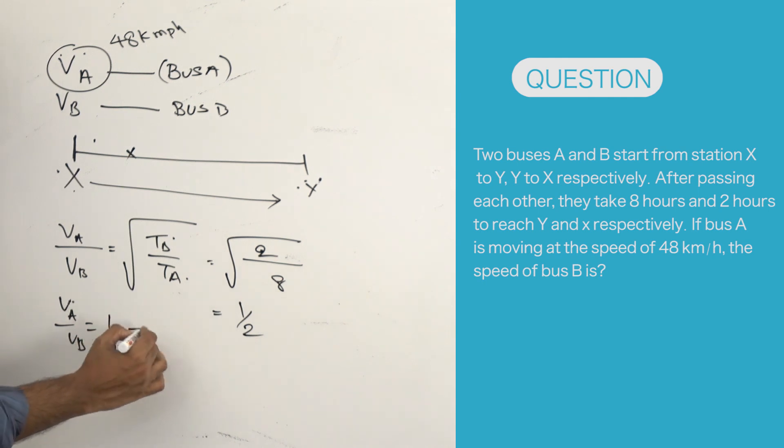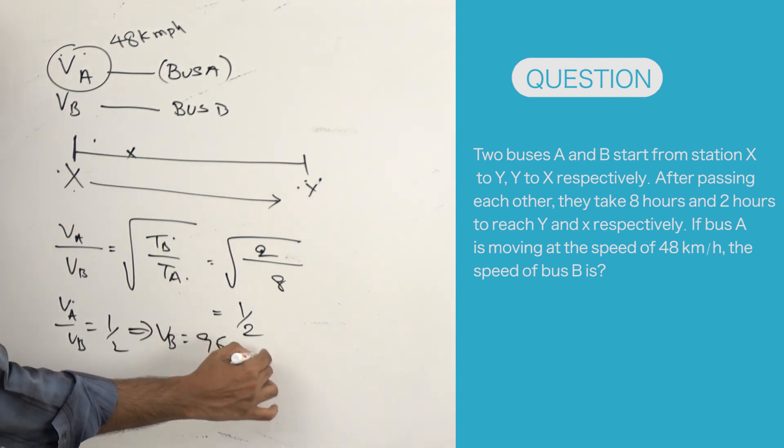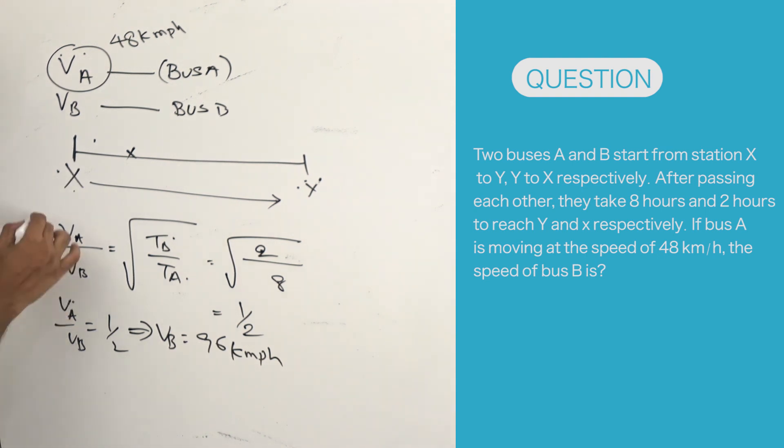96 kmph. This is how knowing this formula will help you solve this question very quickly. Why I'm asking you to derive this formula is it's always good to know the concept behind each formula. Thank you.